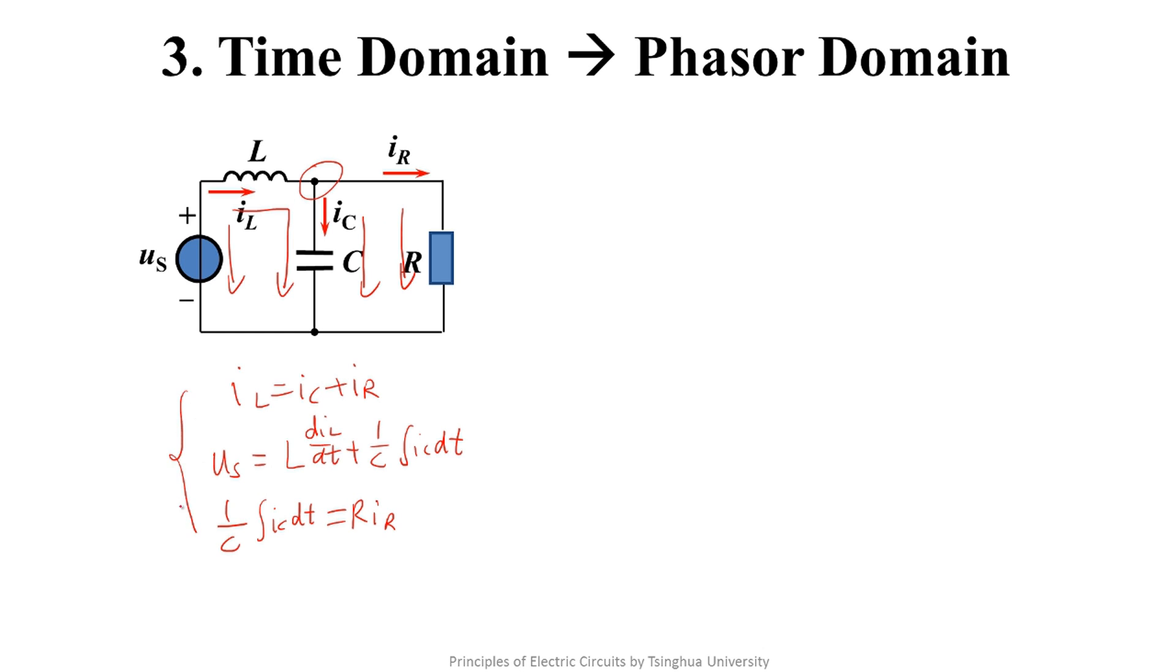These are all the equations we can get. By transforming these equations, we can get the differential equations of any branch variable and solve them afterwards.